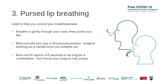Purse lip breathing is a simple technique which consists of inhaling through the nose for several seconds with the mouth closed, and exhaling through the mouth slowly over four to six seconds through lips held in a whistling position. It can be used to help you control your breathlessness after exerting yourself. To do this, you breathe in gently through your nose, then purse your lips as though you're going to blow out a candle. Blow out with your lips in this pursed position, and blow out for approximately four to six seconds or as long as is comfortable. Don't force your lungs to fully empty. It is an effective technique to improve oxygen and carbon dioxide exchange, increase the volume of air exhaled, reduce work of breathing and increase exercise tolerance.